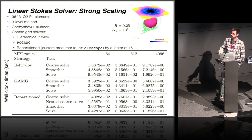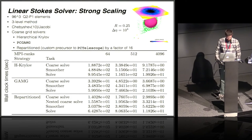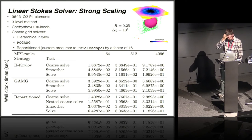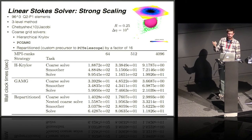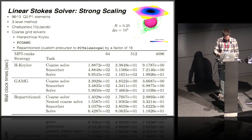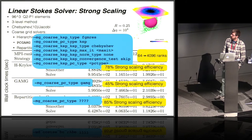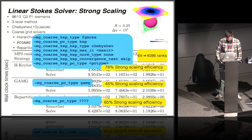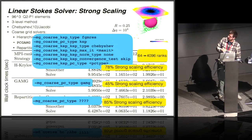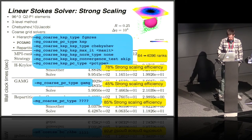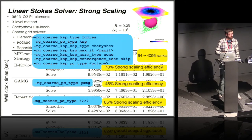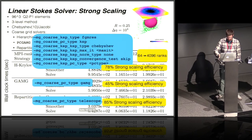As an example application using this, from Dave May's Stokes Flow codes, we show a strong scaling experiment. We use three different coarse grid solvers: a hierarchical Krylov method, an algebraic multigrid solver, and a repartitioned approach. Going from 64 to 4,096 ranks, we see reasonably good strong scaling efficiency with all three. The best performer is the re-discretized solver. The problem is that whereas the first two options were easy to implement by plugging into existing interfaces, the third didn't have an implementation in PETSC until now — which is what this paper introduces.